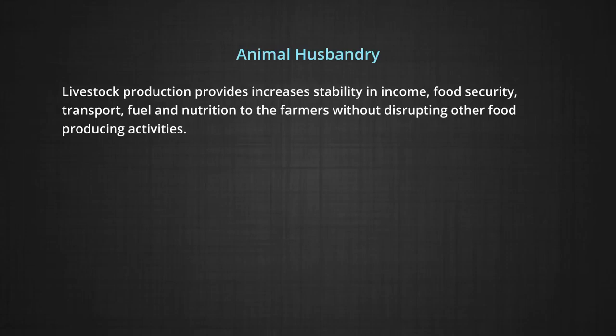Animal husbandry is also another important area. In India, the farming community uses the mixed crop-livestock farming system. Cattle, goats, and fowl are the widely held species. Livestock production provides increased stability in income, food security, transport, fuel, and nutrition to farmers without disrupting other food-producing activities.